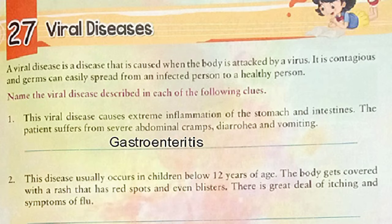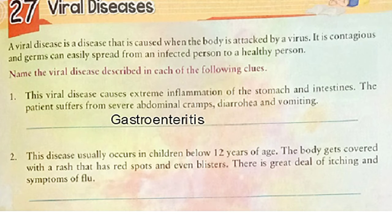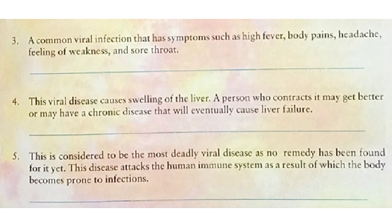It's a tough spelling, so please write it carefully. Now let's see question number 2. This disease usually occurs in children below 12 years of age. The body gets covered with a rash that has red spots and even blisters. There is a great deal of itching and symptoms of flu. It is chicken pox. Now question number 3: a common viral infection with symptoms such as high fever, body pains, headache, feeling of weakness and sore throat. It is influenza.